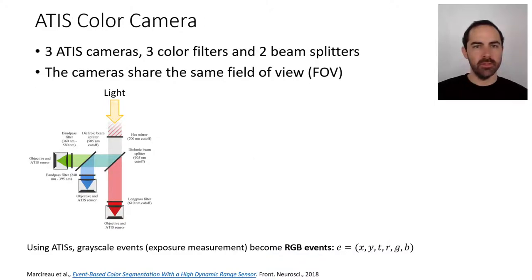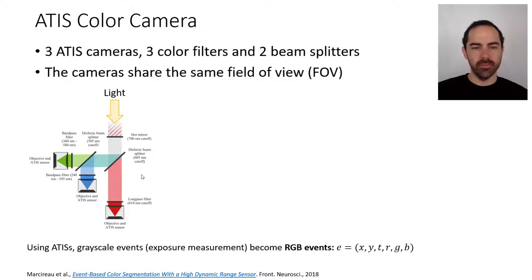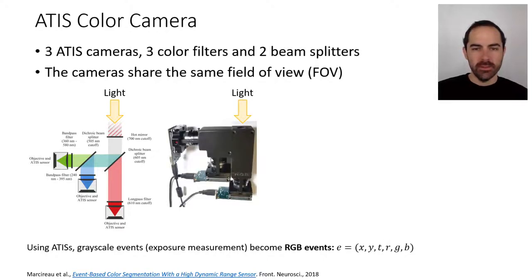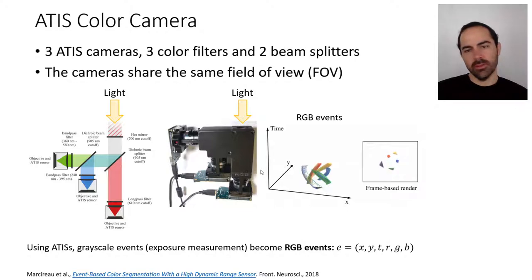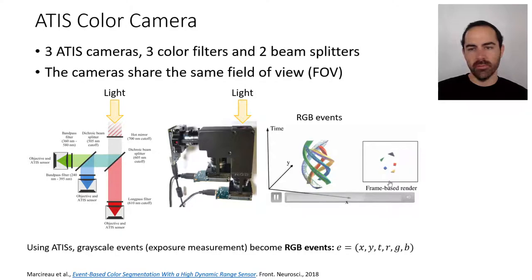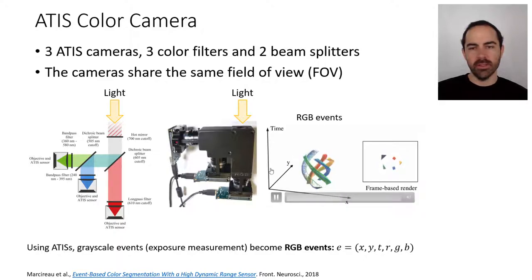Now let's look at the third type of sensor: the ATIS color camera. This is a prototype sensor that combines three ATIS cameras, three color filters, and two beam splitters. Basically, white light comes in and is split by the beam splitter into three different color channels. We use the ATIS grayscale exposure measurement events. Here is the model and the physical device built, showing how light comes in and is split. An animation shows the output events produced by this color camera prototype while viewing a test signal — the events are shown in spacetime and they are colored.